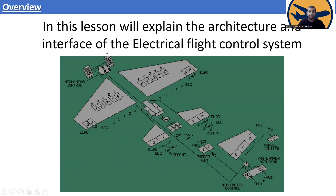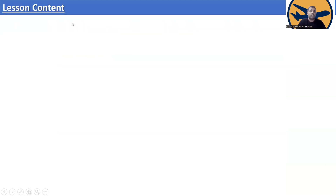You can see in the schematic diagram the mechanical control, the spoilers, the elevators, the diverters, the travel limiter, yaw damper actuators, FCPC 1, FCPC 2, and mechanical control around the trim. I will discuss these things later in this video.